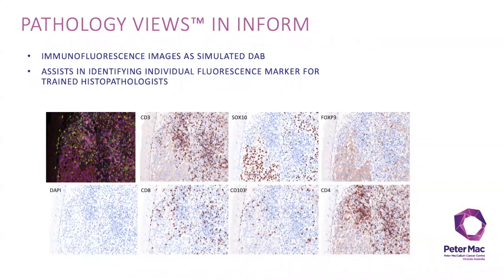When performing your spectral unmixing it is always a good idea to inspect the simulated DAB view for each of your targets using pathology view in InForm. And as you can see in the photomicrographs on this slide each marker is depicted as a chromogenic IHC which is a view more familiar to you.